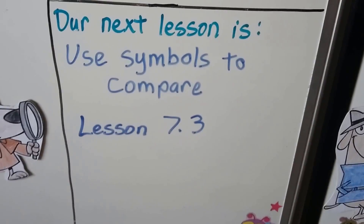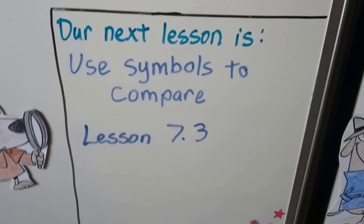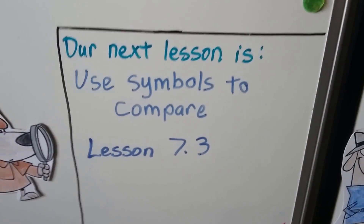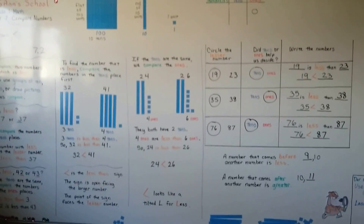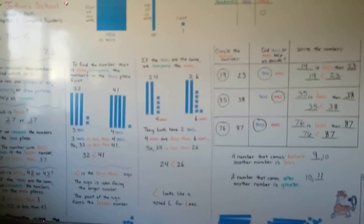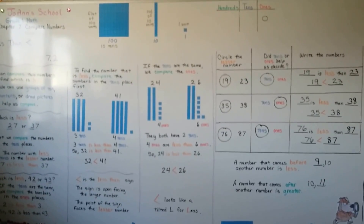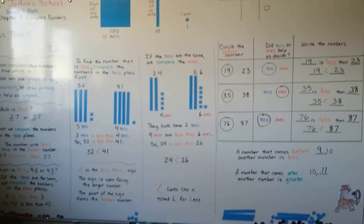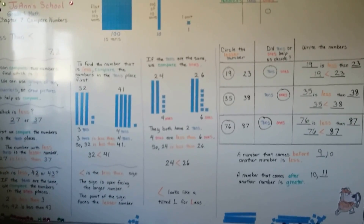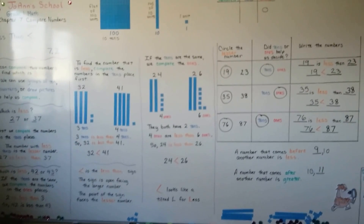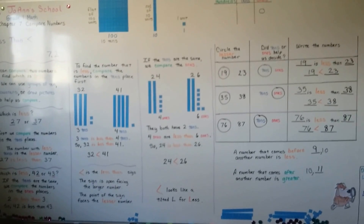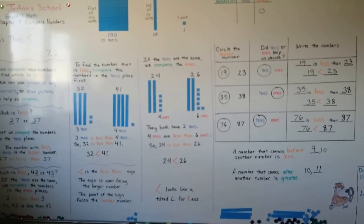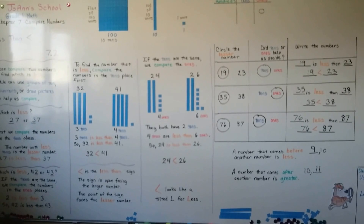We're going to use more less than, greater than, and equal to signs in lesson 7.3. You can get a bowl or a box, put one- and two-digit numbers up to 120 in it, and practice comparing them — pick two numbers and decide which is less than or greater than the other. I hope you're having a wonderful day. I'm really proud of you, and I'll see you next time. Bye!